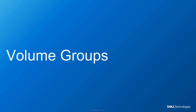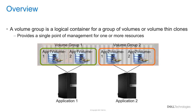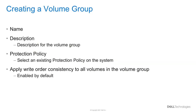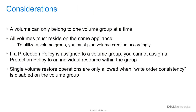A volume group is a logical container holding multiple volumes or volume thin clones, providing a single management point for multiple volumes. When creating a volume group, only a name is required, with the option to set a description, protection policy, and write-order consistency. The volumes, called members, are added after creation and can be found under the volume group's properties. Key considerations: a volume can only belong to a single volume group; all volumes in a group are placed on the same appliance. A volume in a volume group cannot be assigned a separate protection policy if the group already has one. Also, a single volume cannot be restored independently if write-order consistency is enabled — the entire volume group and all member volumes will be restored.